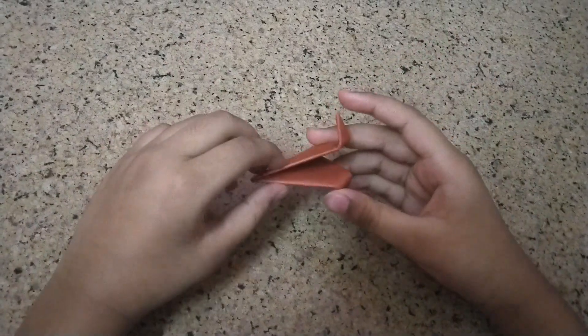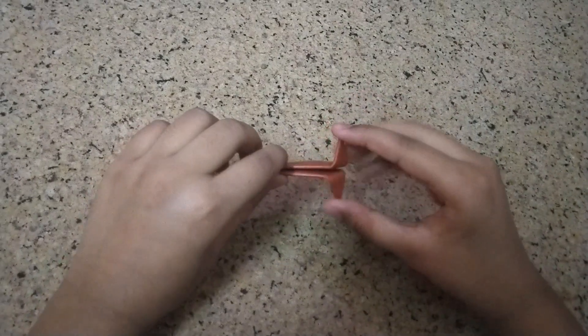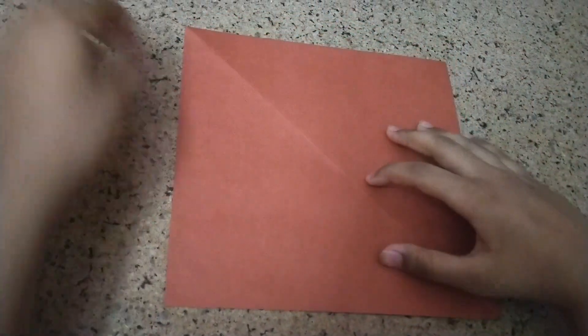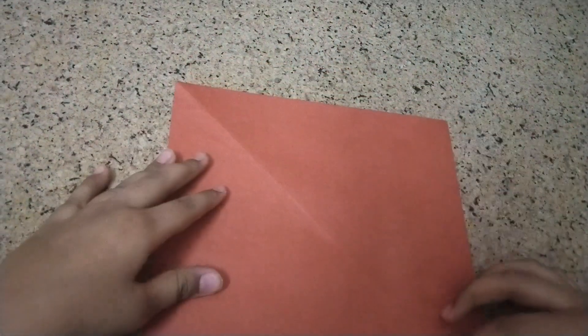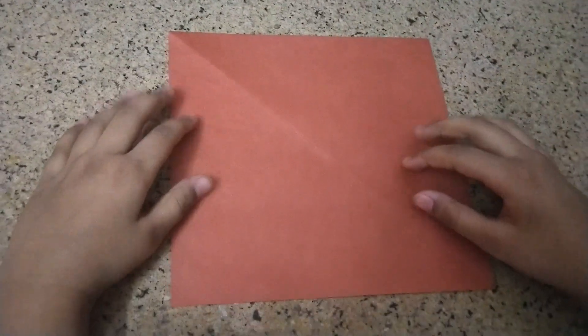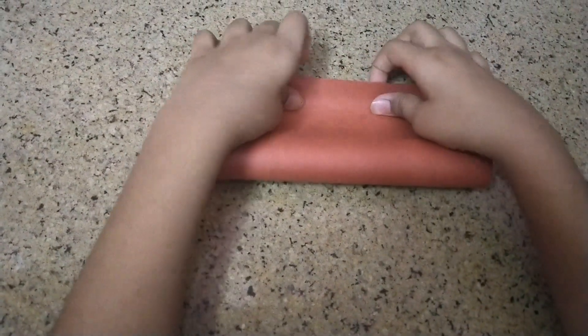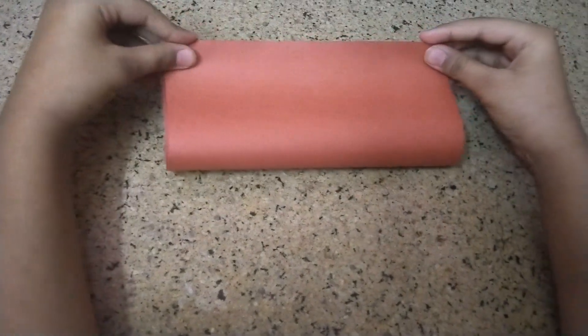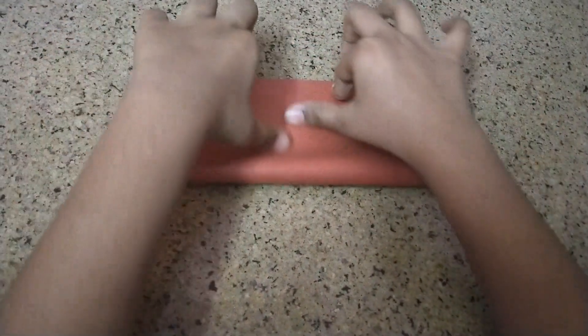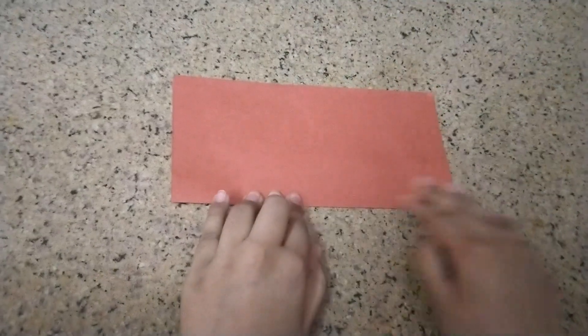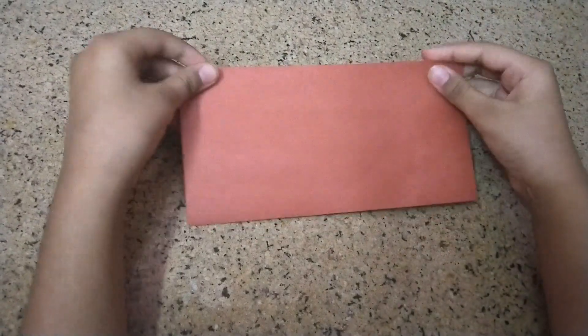Hi guys, today I'm going to be sharing how to make this fidget spinner, so let's start. First, to make this you will need a 21 centimeter by 21 centimeter square sheet. Fold it in half like this.